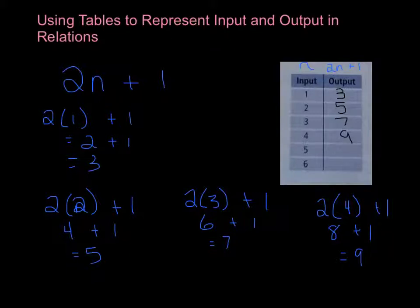And I'll just use mental math to finish the last two. So if my input is 5, I would go 2 multiplied by 5, which is 10. 10 added to 1 is 11. And then for the last one, 6 multiplied by 2 is 12. And 12 plus 1 is 13. So this is an example of how you use a table to represent your input and output and the relation when you have an algebraic expression given to you.